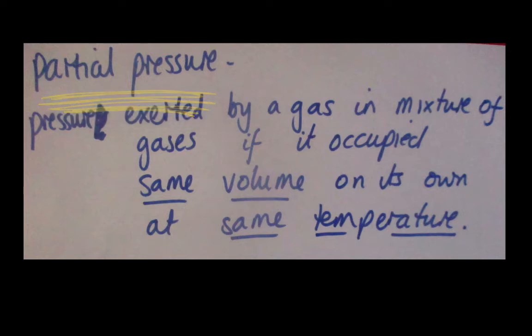The partial pressure is the pressure exerted by a gas in a mixture of gases, as if it occupied the same volume that it's in with those other gases, but on its own, and at the same temperature. So, if we took out all the other gases, kept the volume the same and the temperature the same, we work out what the pressure would be by that particular gas.